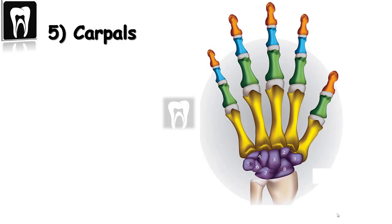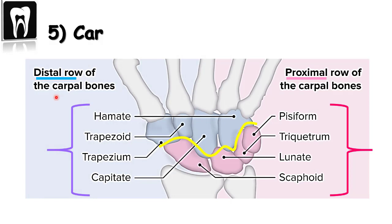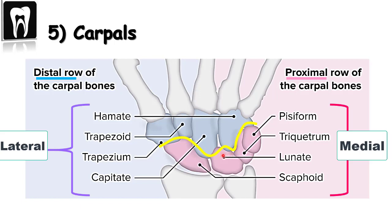These eight bones are called the carpal bones — small, irregular-shaped bones in the palm. The eight carpal bones can be divided into two rows: the proximal row and the distal row. The proximal bones are closer to the arm and the distal bones are farther from the body. The proximal row from lateral to medial is: scaphoid, lunate, triquetrum, and pisiform. The distal row from lateral to medial is: trapezium, trapezoid, capitate, and hamate.